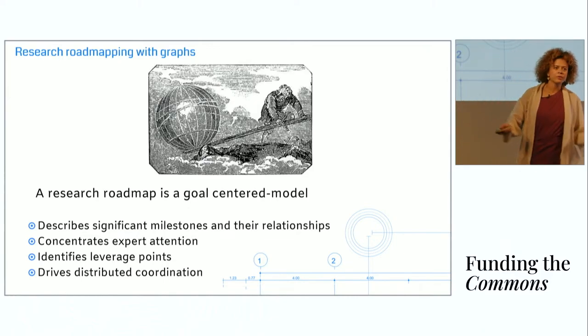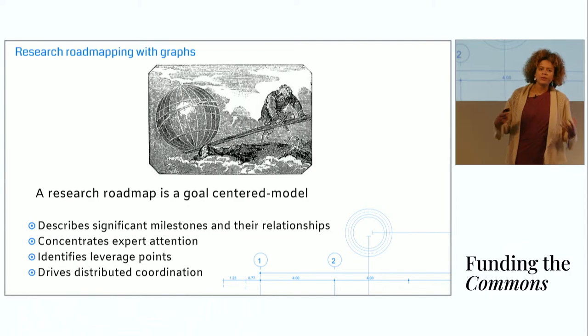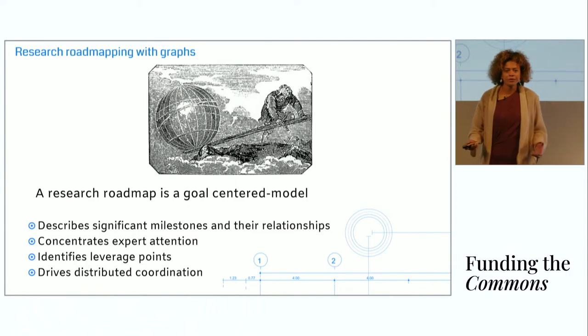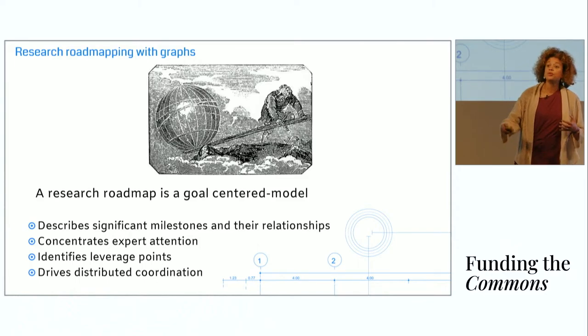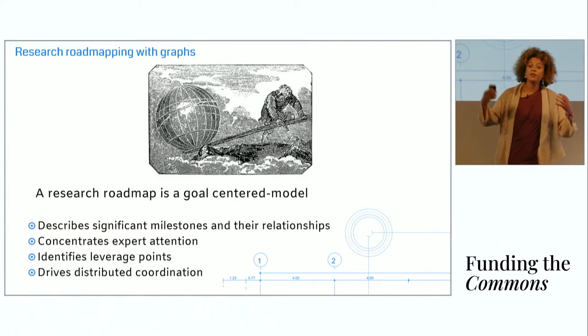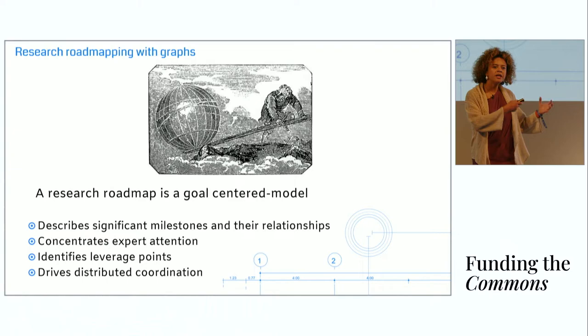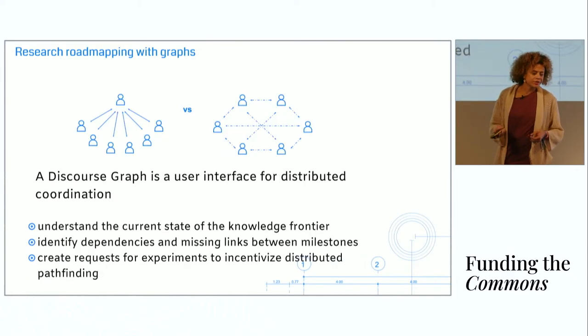I've said roadmap and invoked the term roadmapping, but I haven't really defined my terms. What I mean by a research roadmap: it's a goal-centered model, essentially centered on a breakthrough innovation. It describes significant milestones in a technological effort and the relationships between those milestones. It is meant to concentrate expert attention on a research problem. It identifies leverage points in the research system and surfaces them, sometimes serendipitously, for expert attention. And it allows us to drive distributed coordination around a problem. It gives a shared context for attacking a problem, for examining a problem, evaluating it.